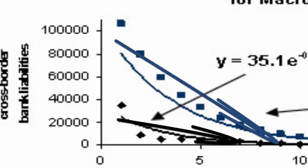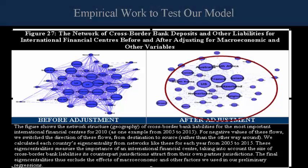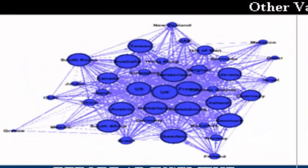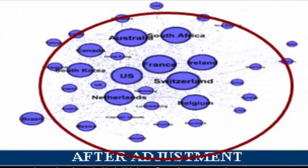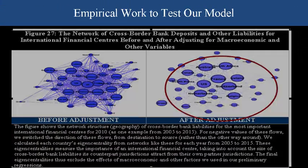Namely, more jurisdictions would have given Australia more money. Figure 27 shows the way we adjusted our international financial center network before and after making these changes from our regressions. If we see a very tight, densely packed network of international financial centers before making the adjustments, after we see a much cleaner view of these international financial centers.